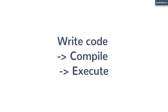But with JShell, you don't have that sequential process anymore — it becomes more of an intertwined process. You write code, compile and run. Again, you write some more code, compile and run. And each time you're writing code, compiling and running, you are adding on to the existing state. So it's not like a final state anymore — it's more of an evolving state.